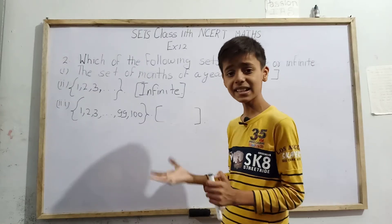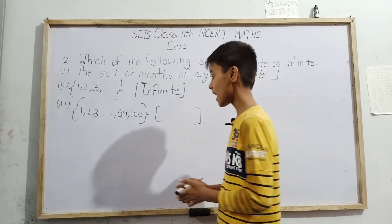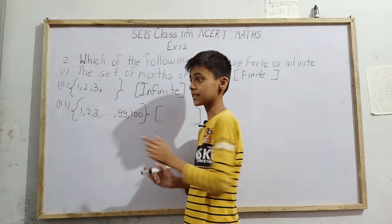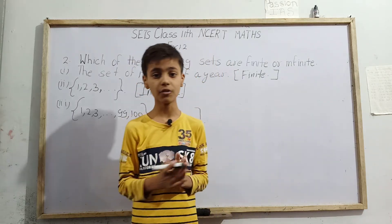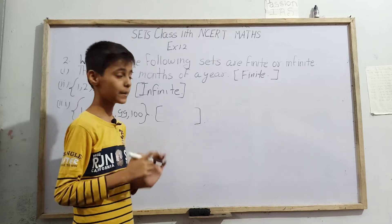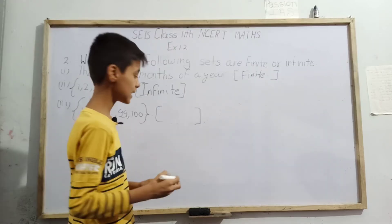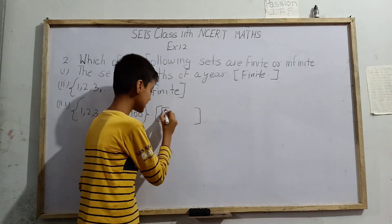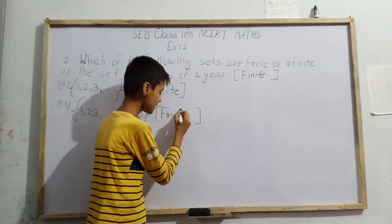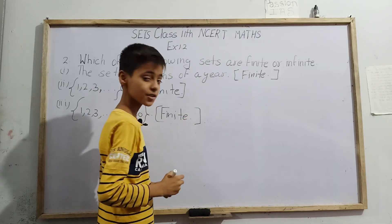How? 100 is the endpoint for this set. It has an endpoint. It means it can be easily counted. It does not have unlimited elements. So by this, what we can write is that this kind of set is a finite set.